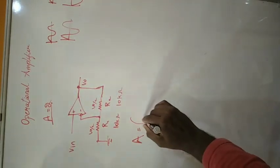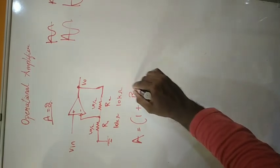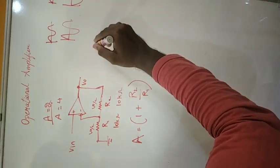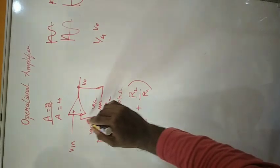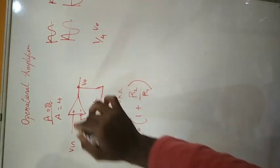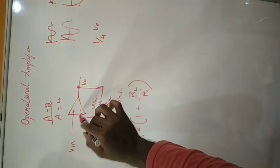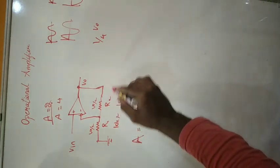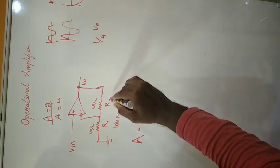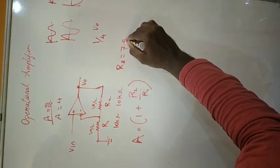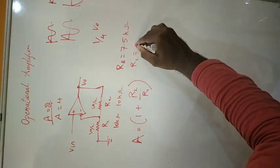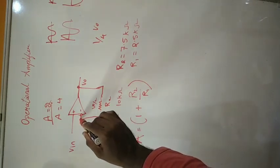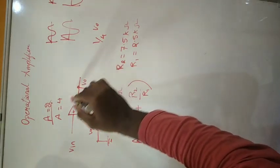If you want to build an amplifier with a gain of 4, you have to feed 1/4th of V0 to the inverting terminal. To achieve this, you can choose R2 as 7.5 kilo ohms and R1 as 2.5 kilo ohms. Then 1/4th of V0 will be across R1, and you can feed that value to the inverting terminal to get a gain of 4.